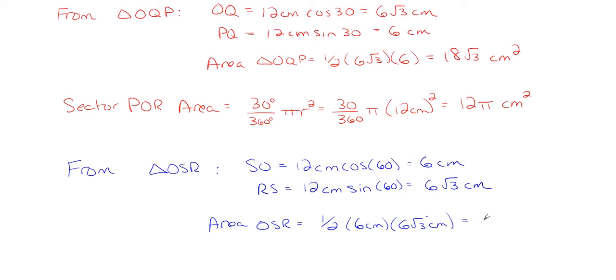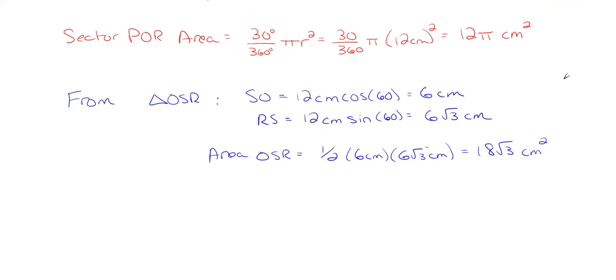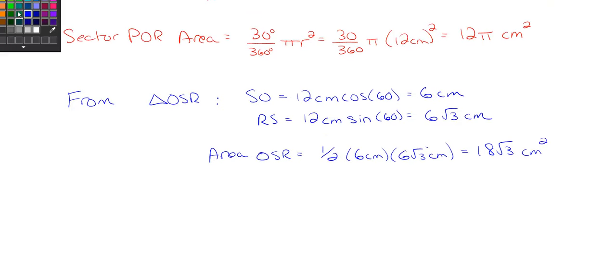And that gives me 18 square roots of 3 centimeters squared which is exactly the same area as the previous triangle. You just had your height and base flipped here. So now that we have everything we need we can go ahead and determine our area in green.